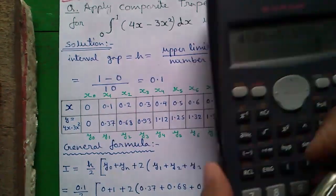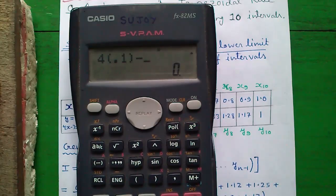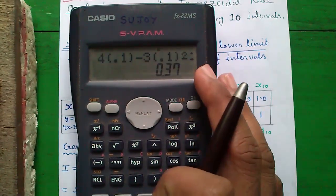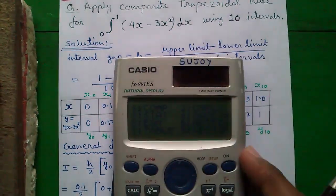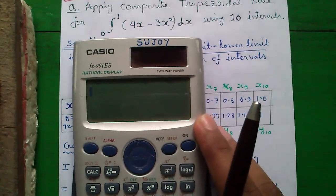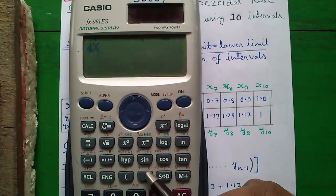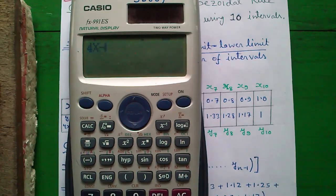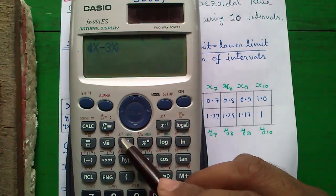So for x equals to 0.1, y becomes 0.3. Similarly, on this calculator you can directly form the whole expression. How? Enter 4 and for x press alpha and the right parenthesis. You can see there is a small x above the right parenthesis minus 3 alpha right parenthesis and x square.